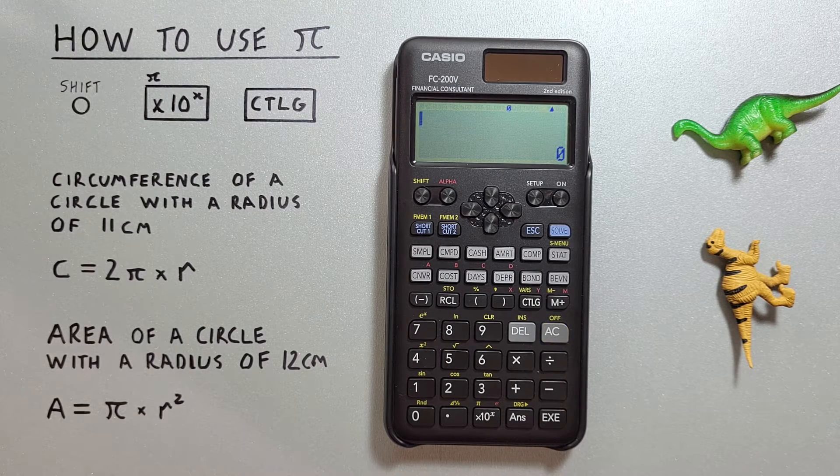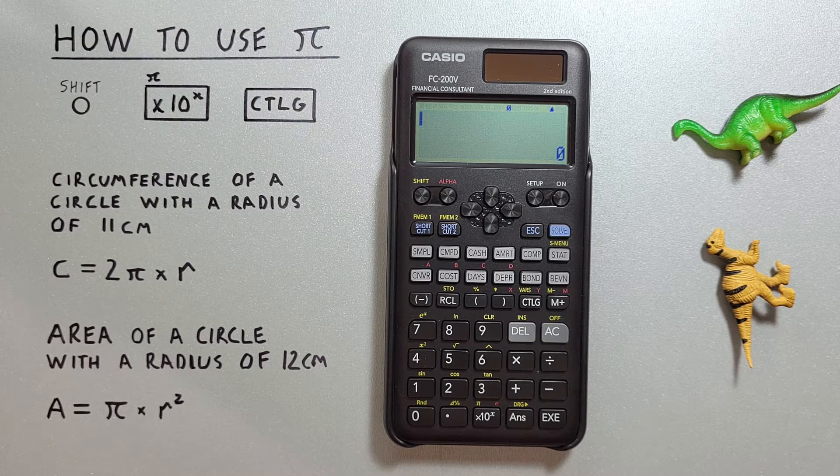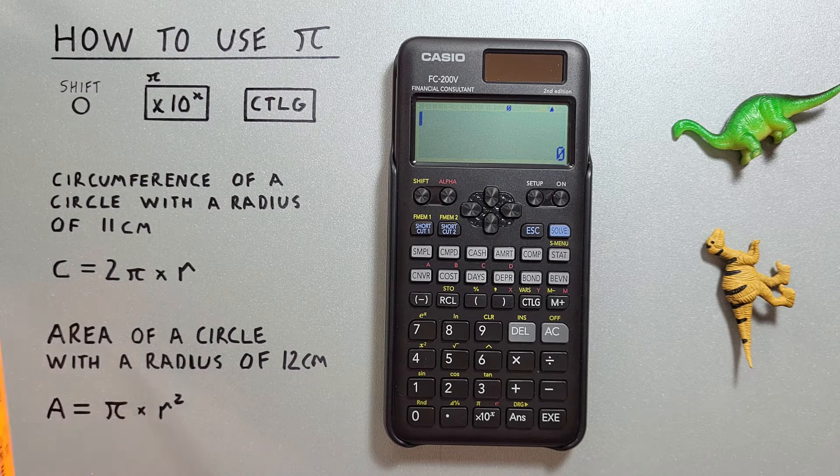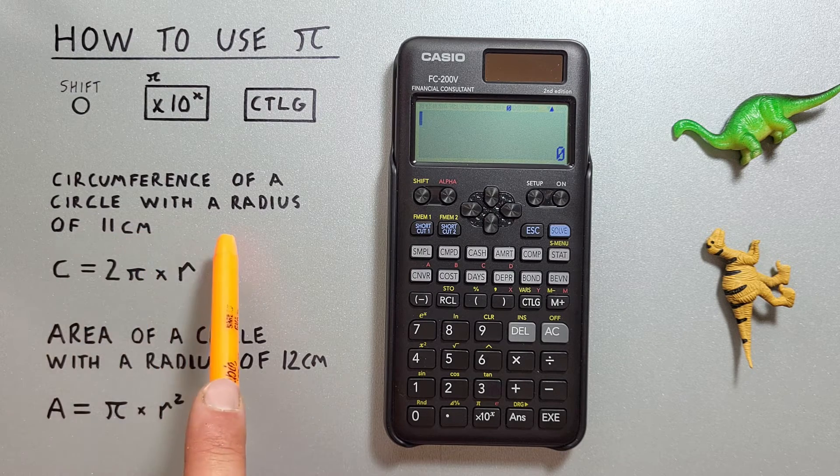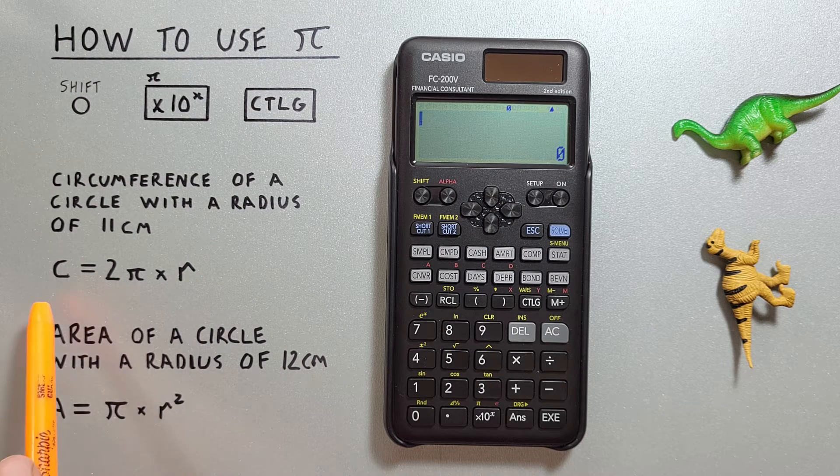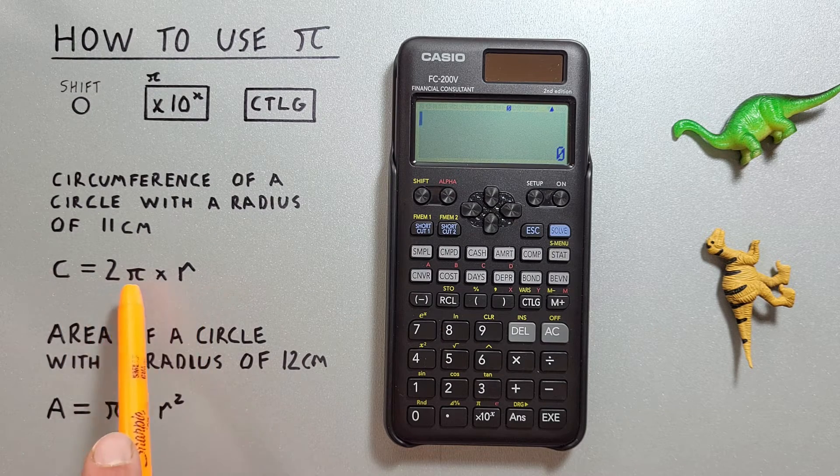Pi is useful in a lot of formulas, particularly when working with circles. For example, if we wanted to solve the circumference of a circle with the radius of 11 centimeters, we can do this by using this formula here: C = 2π × r.